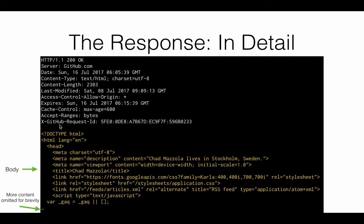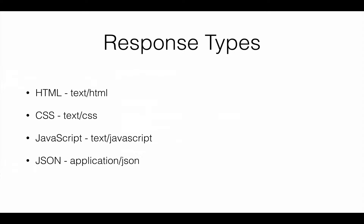There's more to this HTML, but I've omitted the rest of the content for brevity. All responses will come with a content-type header, which tells you what type the response body is. In this case, the type of the response is text/html. This is called the MIME type. Some other commonly used MIME types are text/CSS, text/JavaScript, and application/JSON. JSON will be commonly used in Ajax-enabled web applications.